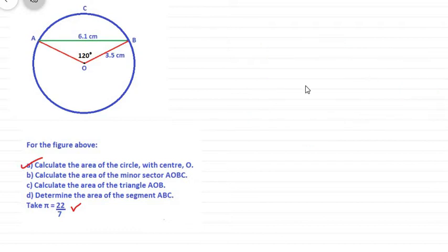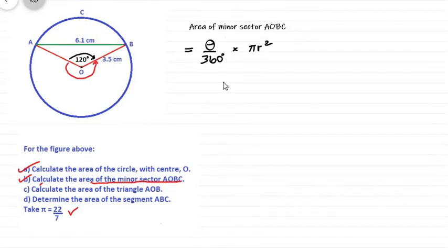So next, we're looking at part B. We found the area of circle to be 38.5 centimeters squared. And now we're looking at the area for the minor sector, sector AOBC. So we're looking at this region here, the region between the two radii and the arc ACB. So theta is the angle of a sector, or the sector angle, and we're going to use that to help us define the area of the minor sector.